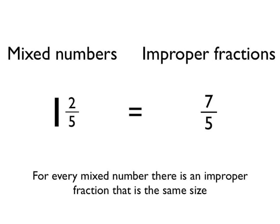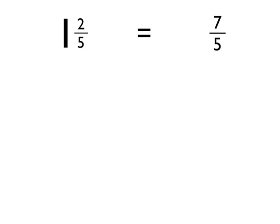Or vice versa. Let's look now and see if we can come up with a way of showing that 1 and 2 fifths is equal to 7 fifths — that both of these represent the same size number.